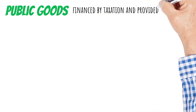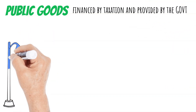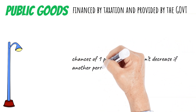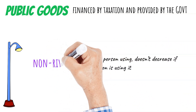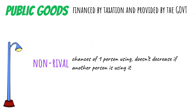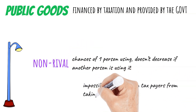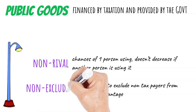Now, public goods are totally opposite of private goods. They are financed by taxation and provided by the government. For example, street lights — the chances of one person enjoying street lights doesn't decrease if another person is using it. Hence public goods are non-rival. It is also not possible to exclude non-tax payers from taking advantage of street lights, hence they are non-excludable.